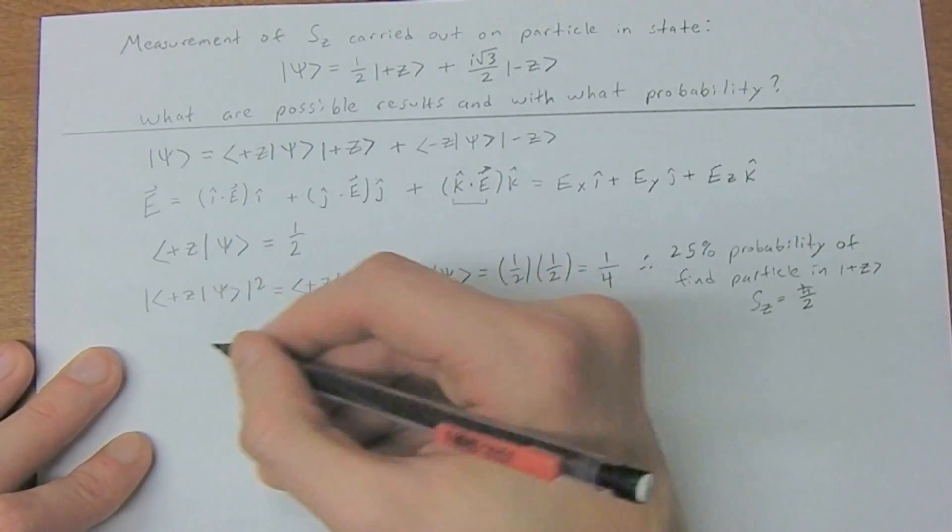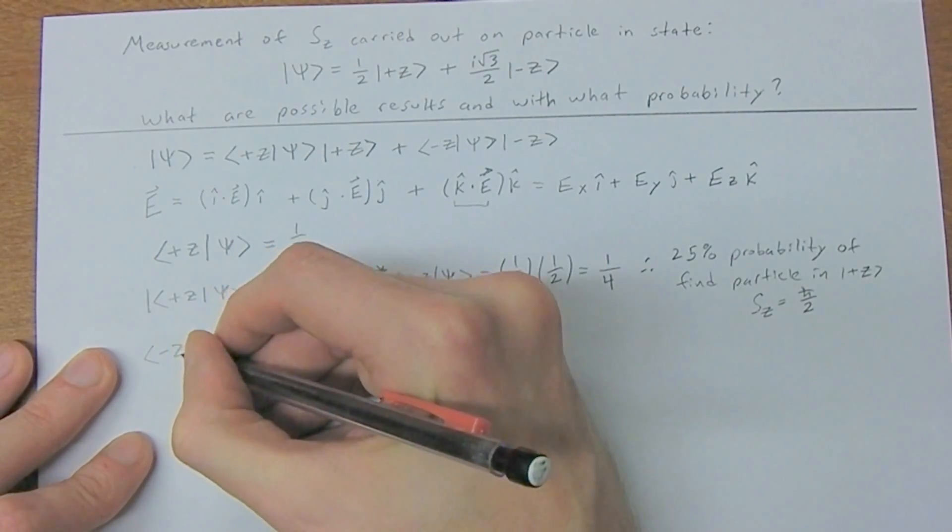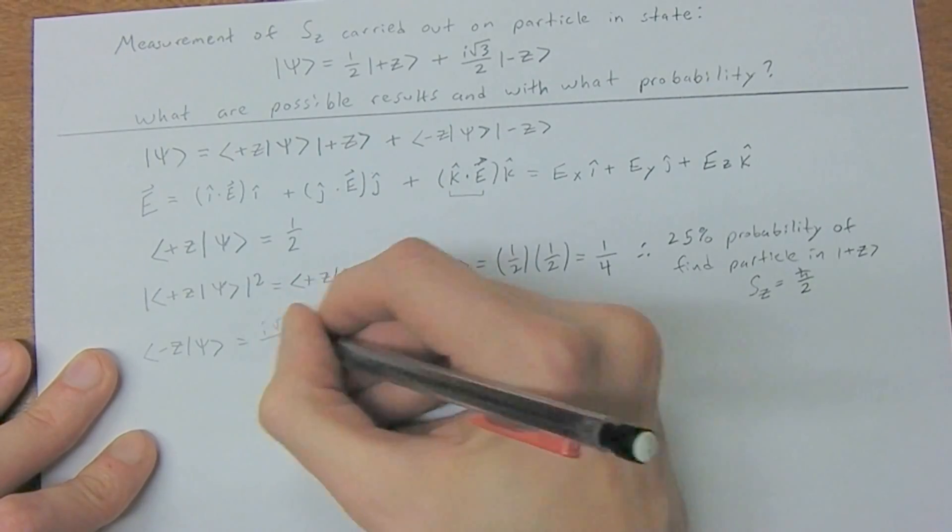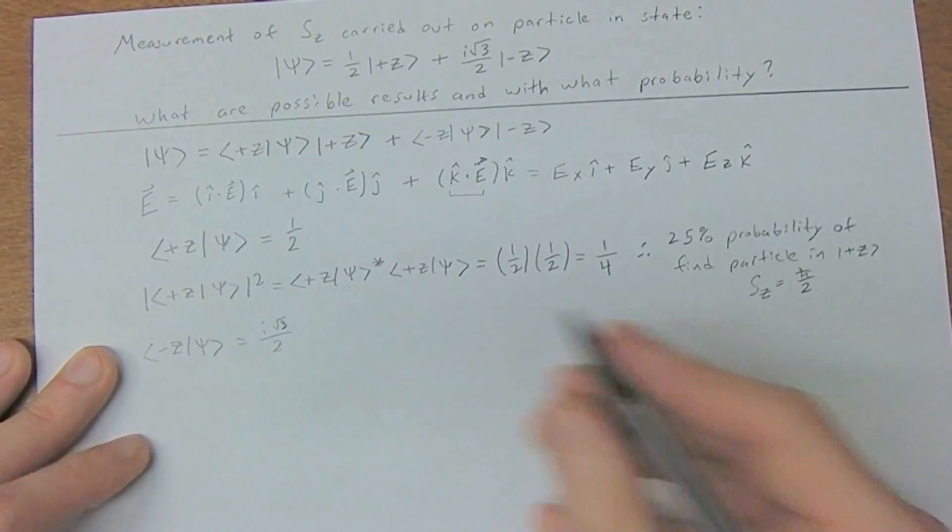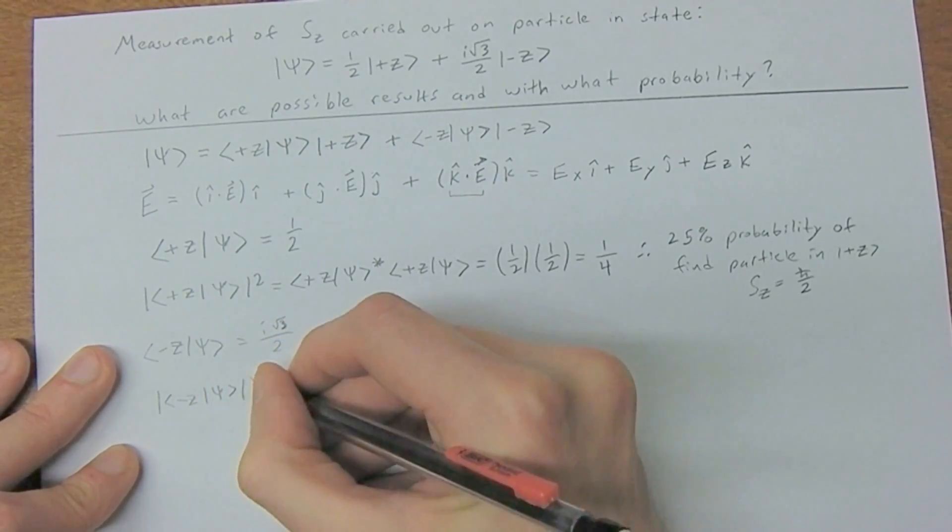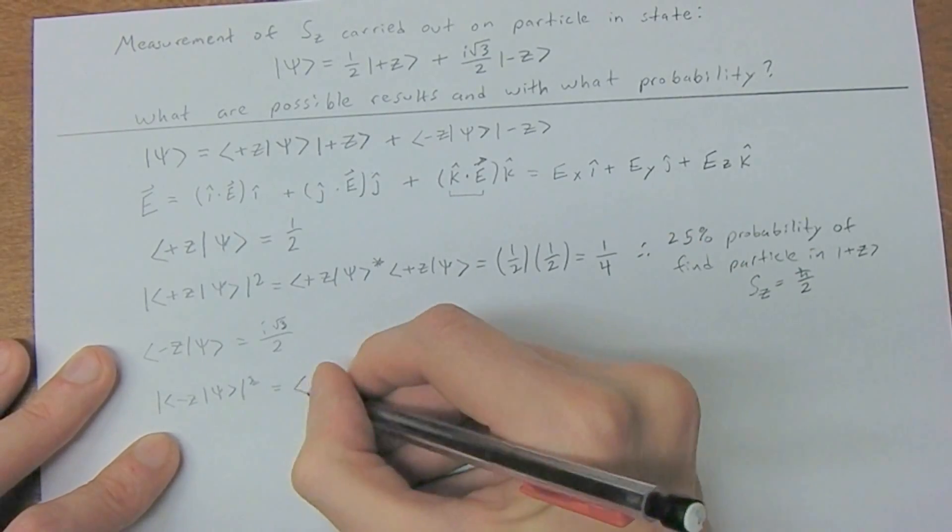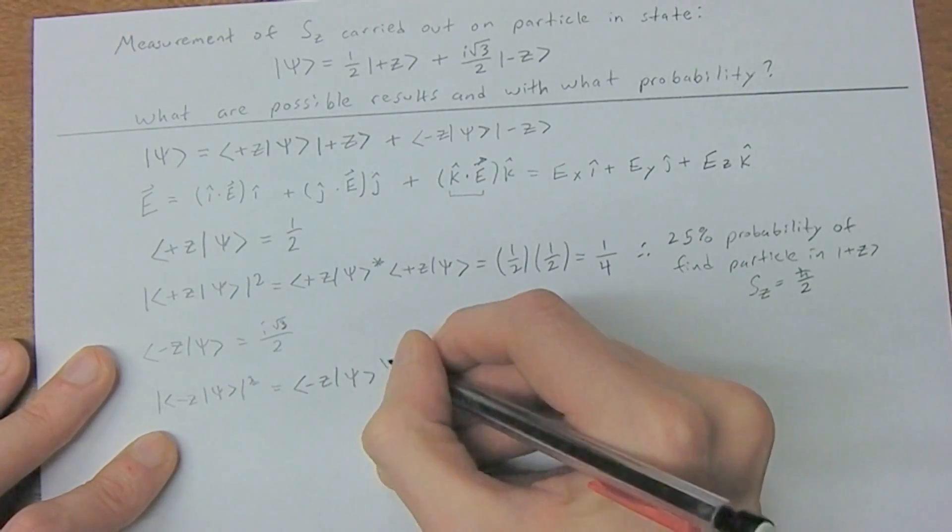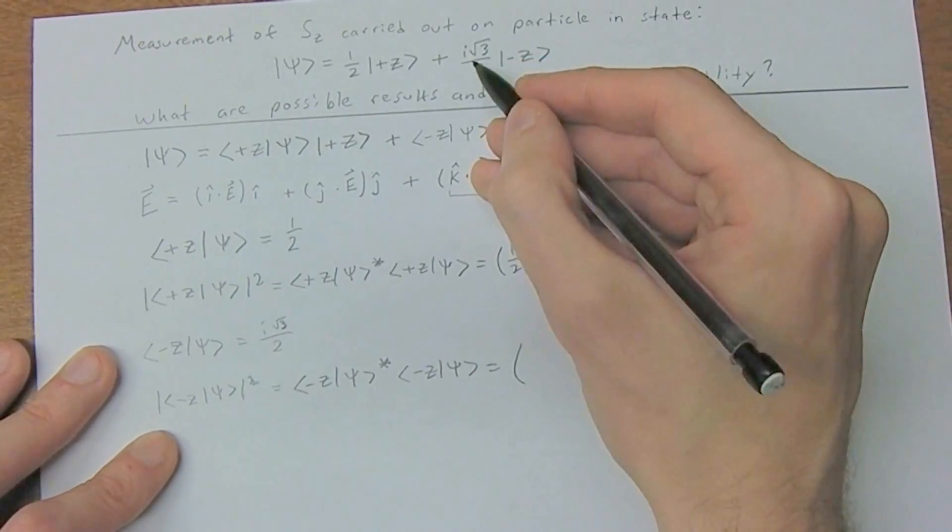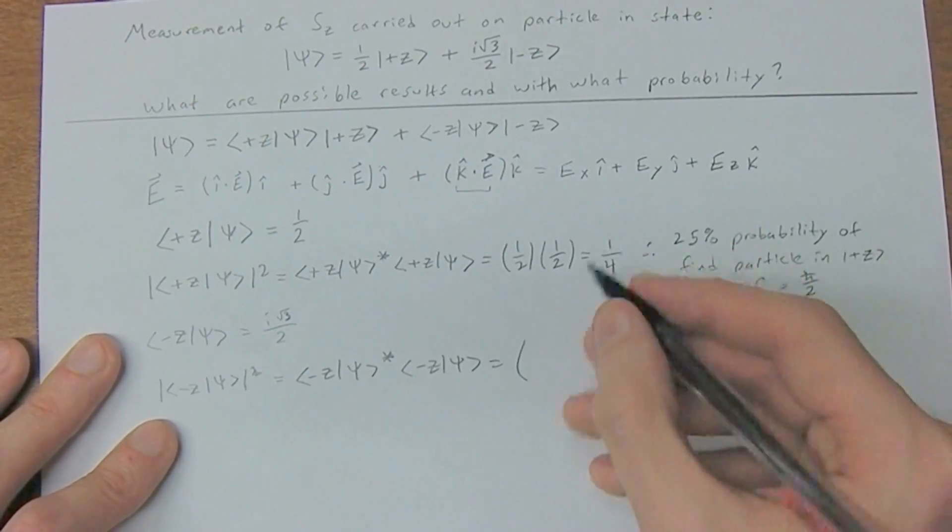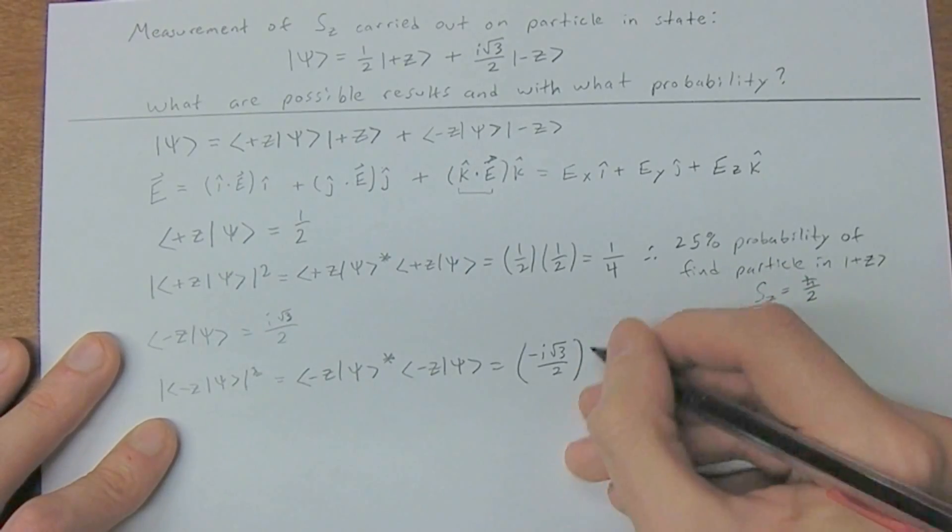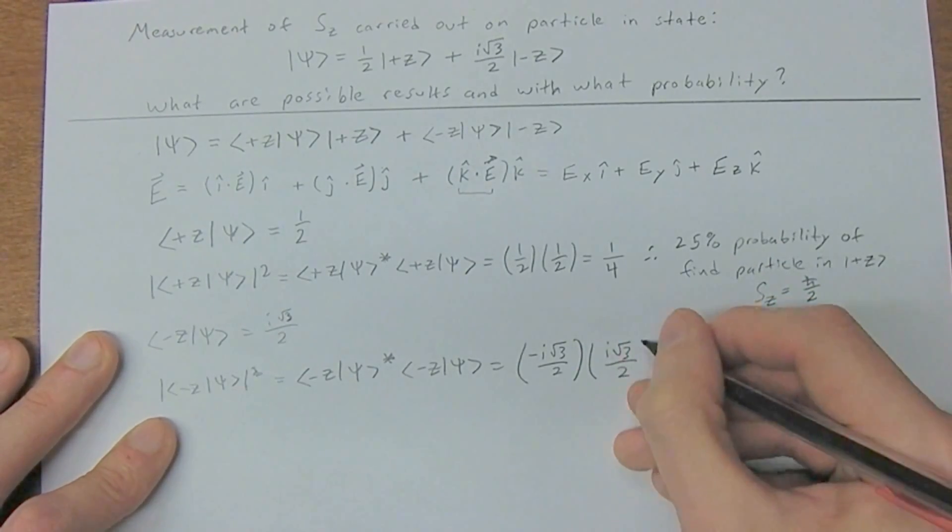Now let's look at our other term here. Our other probability amplitude is negative z psi, which is i square root of three over two. If we multiply that by its complex conjugate, I'm actually going to do this out again just to get you used to the notation. The complex conjugate negative z psi, remember we just add a negative to the i or any i's in our equation. So negative i square root of three over two times i square root of three divided by two.